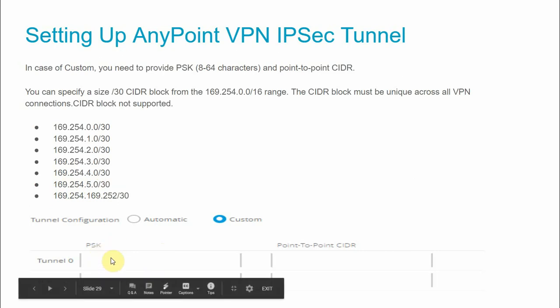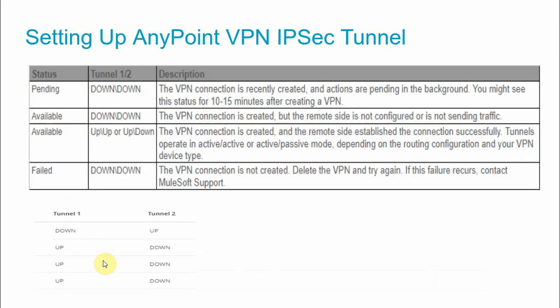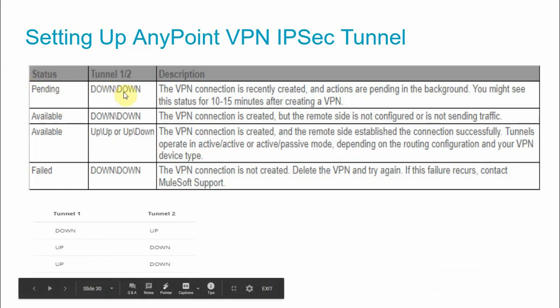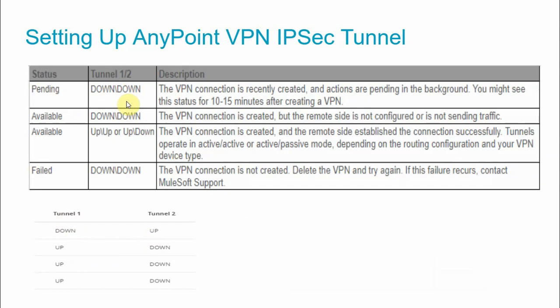You provide a PSK for Tunnel 0 and Tunnel 1 — either get it from your network administrator or create one and share it with them so they can configure it on their device. Once you set up the VPN, the status changes through several states. The first status will be 'Pending', with Tunnel 1 and Tunnel 2 both down. This means the VPN is being created and some background actions are pending — you may see this status for 10 to 15 minutes after creating the VPN.